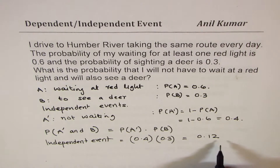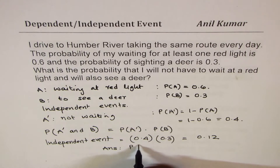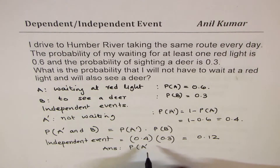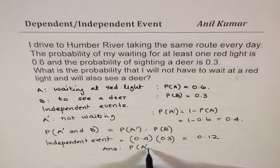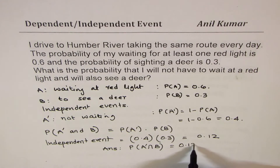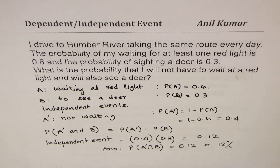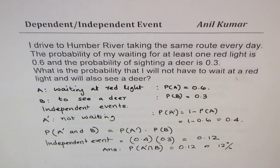So our answer is 0.12 or 12%. The probability of not waiting at the light and also seeing the deer is 0.12. I hope the concept is absolutely clear. Feel free to write your comments, share your views, and if you like and subscribe to my videos, that would be good. Thank you and all the best.